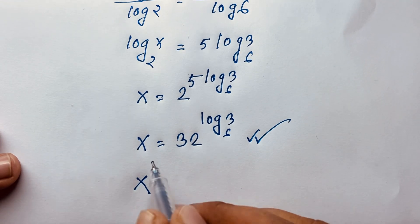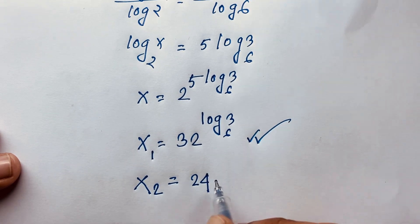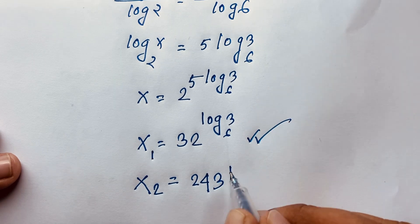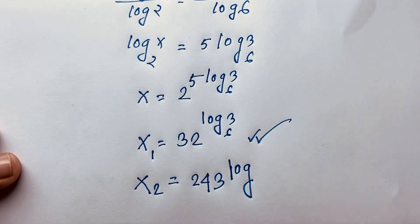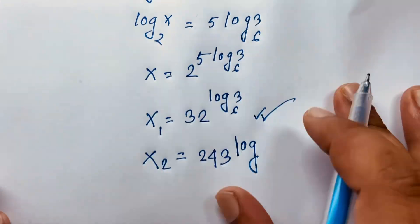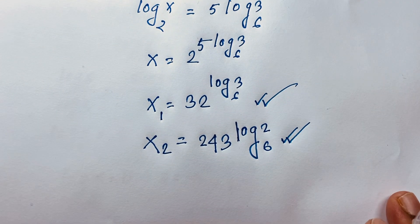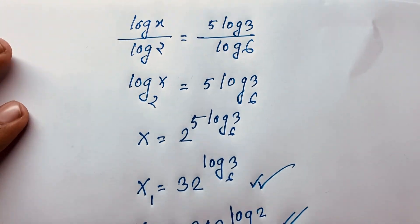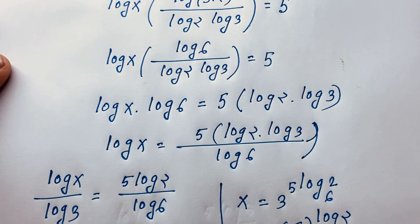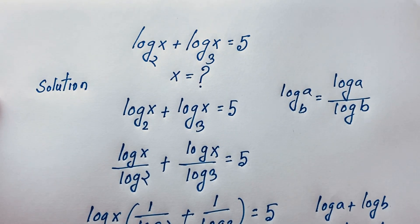So we find two equivalent expressions for x: x₁ equals 243 to the power log 2 base 6, and x₂ equals 32 to the power log 3 base 6, both equal to 6. Thank you all. If you enjoyed this video, please subscribe to my channel for other interesting videos. Goodbye, take care.